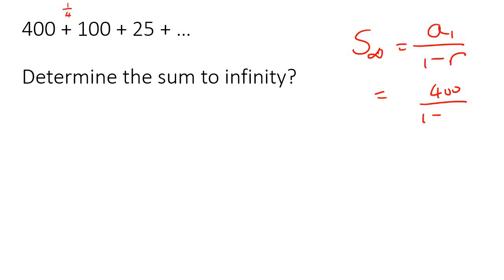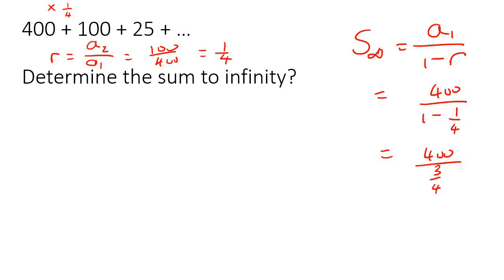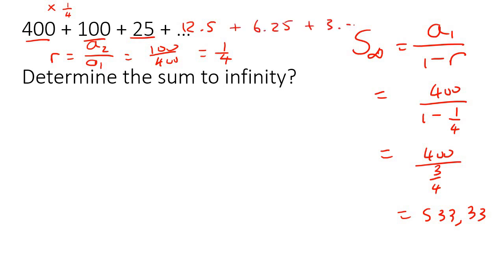To work out R, you can always do term 2 divided by term 1, and that's going to give you 100 over 400, which is a quarter. So we fill in a quarter, and that gives us 400 over three-quarters, which gives us 533.33. So what that means, once again, is you can go add up all of these numbers. The next number would be 12.5, then 6.25, and it just gets smaller and smaller until it eventually becomes zero. Then add all those numbers together — and this is what you would get.